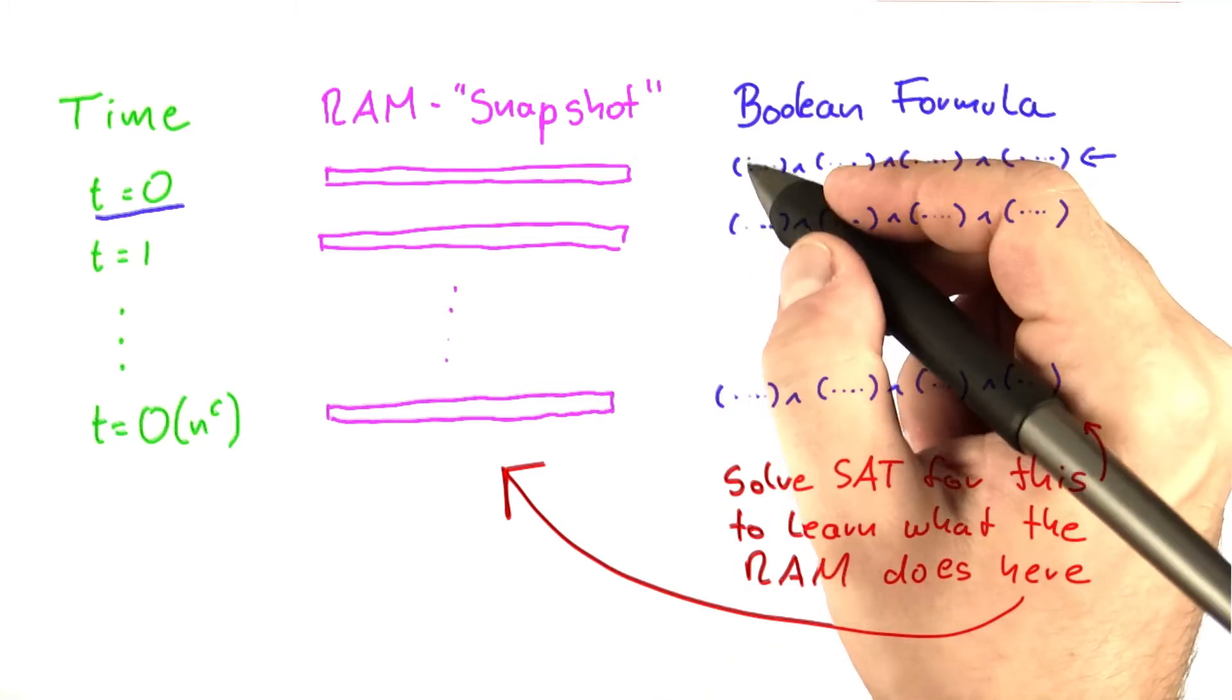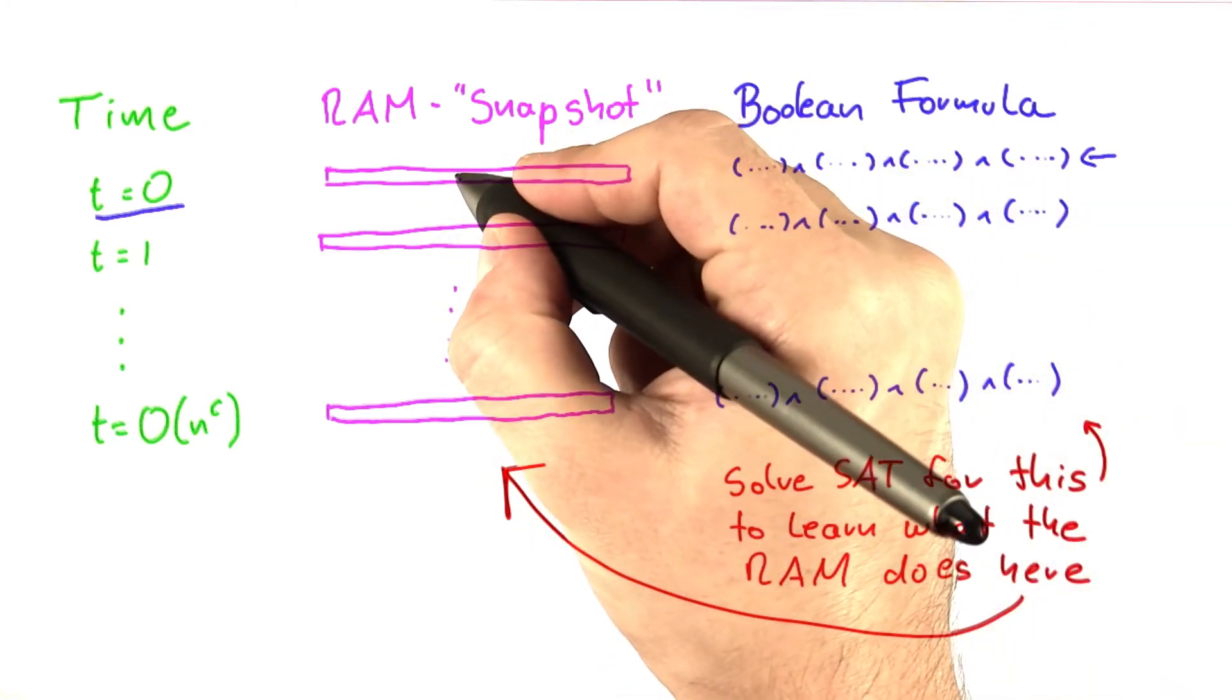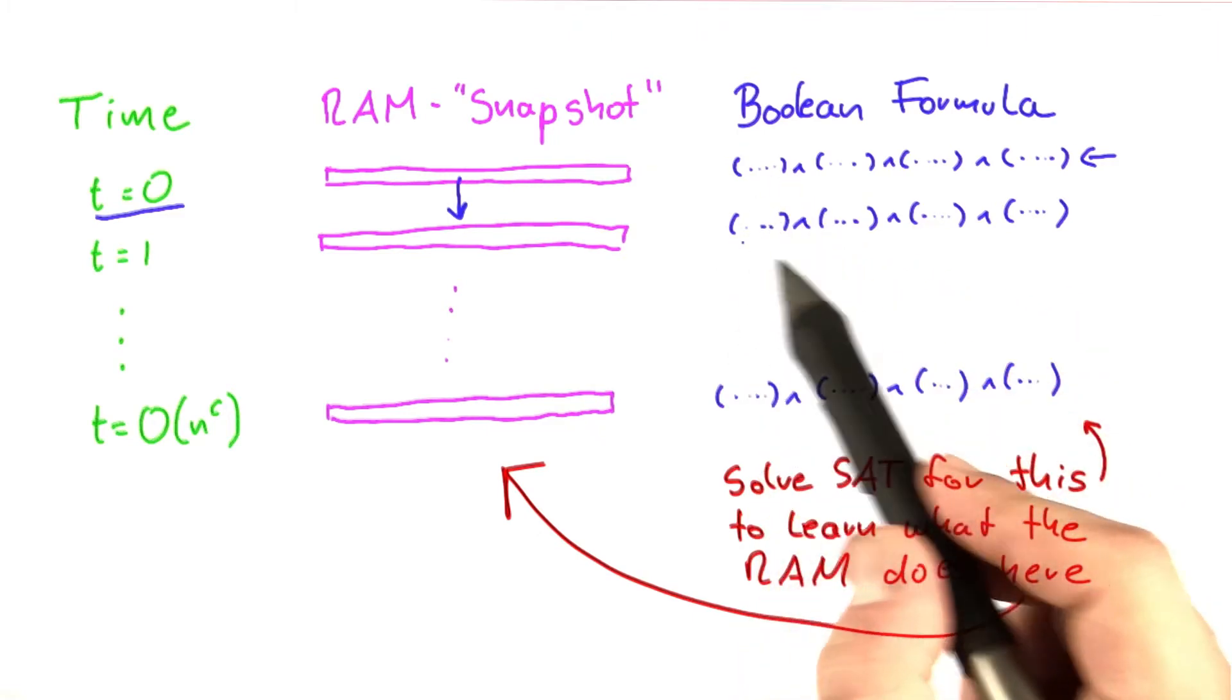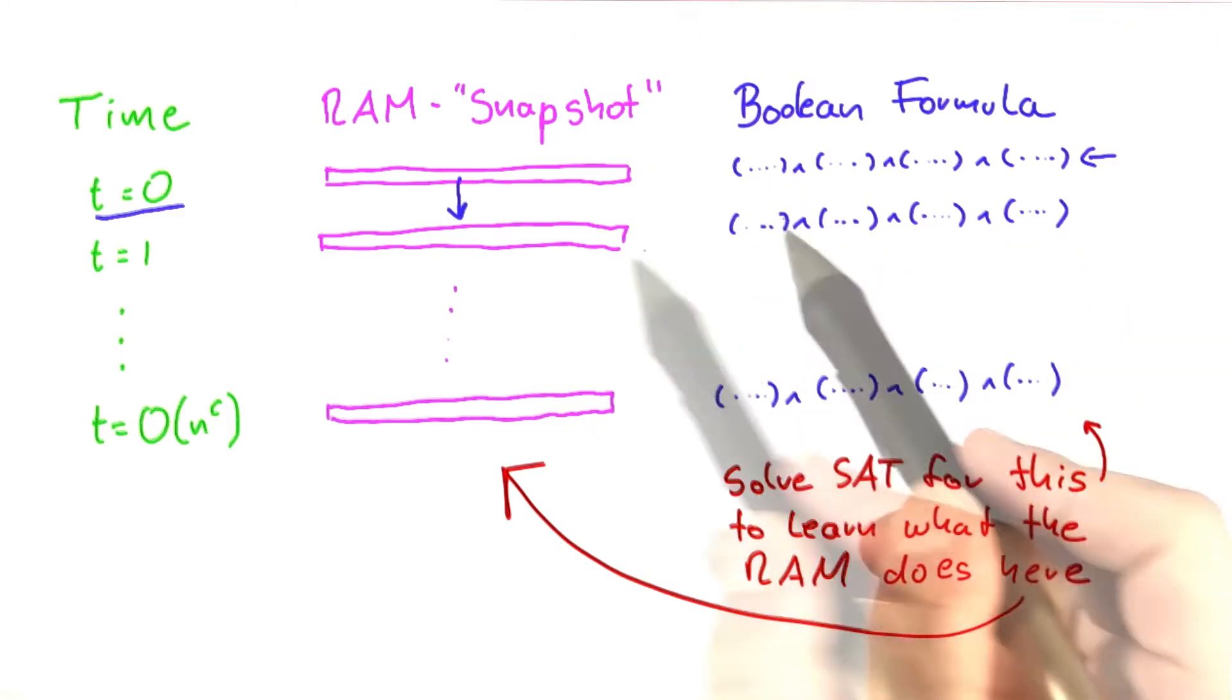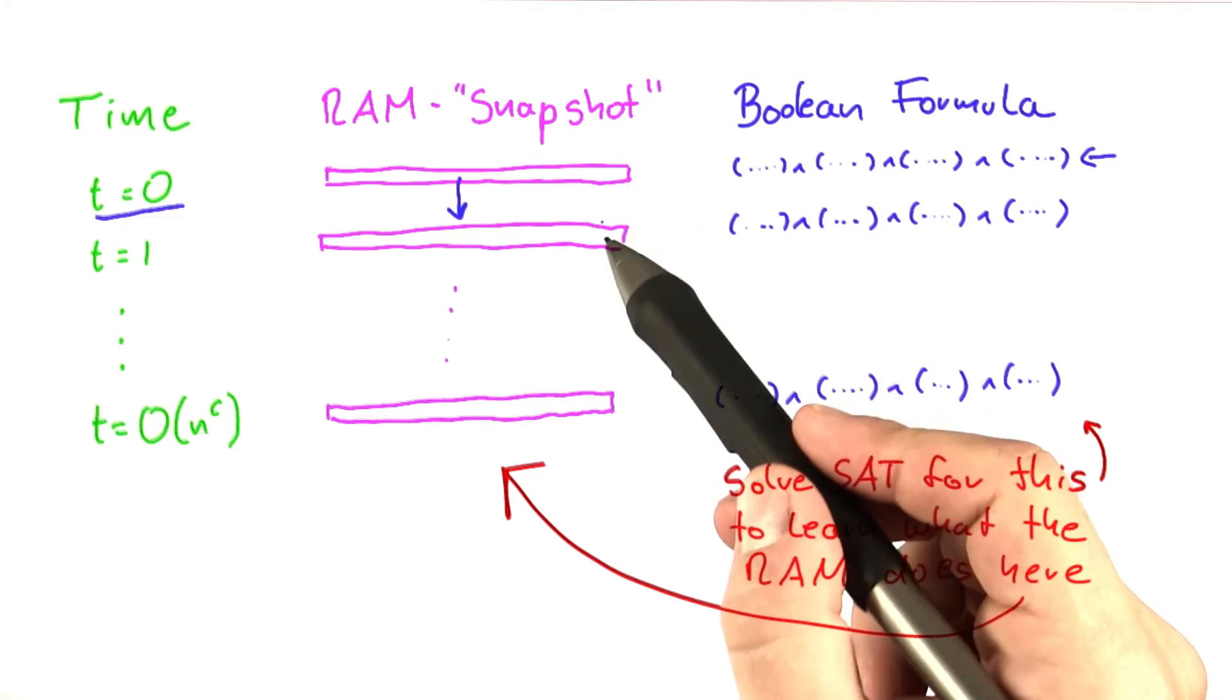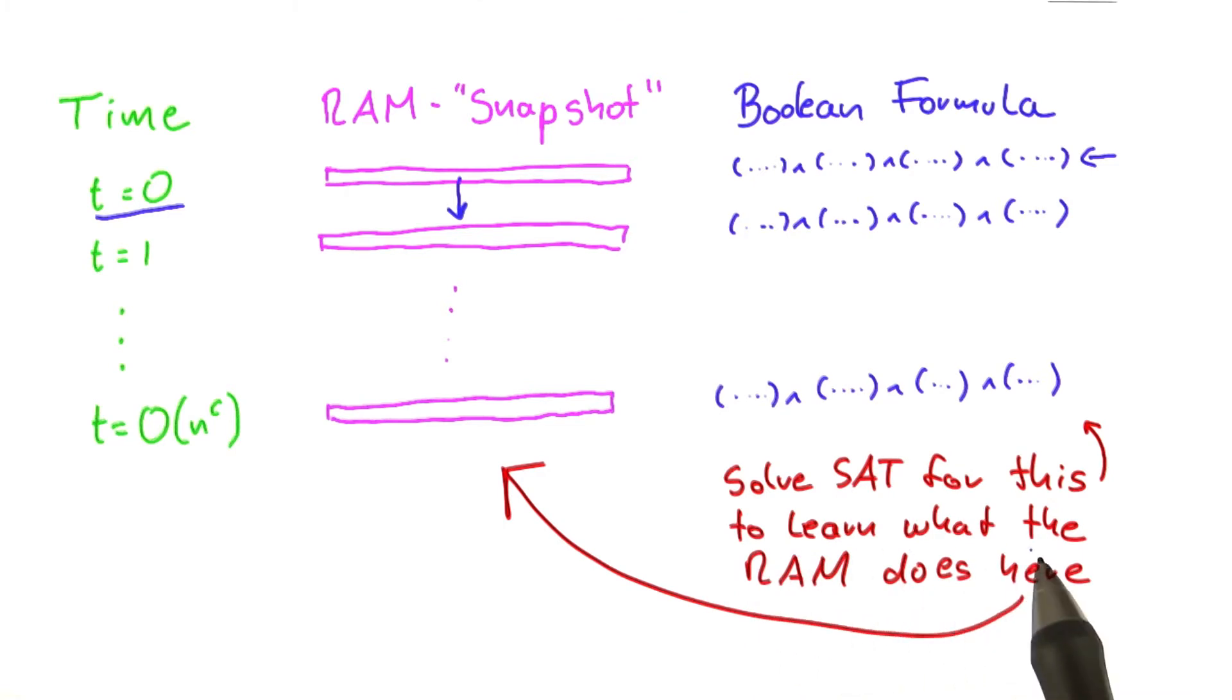But now we need to ensure that they fit together. Because once the machine starts out in this snapshot, it will move to the next one. And so we must make sure that if we have an assignment for the variables here that represents a snapshot, then the snapshot that is represented here must fit together with this one, so that it's a valid representation of what the RAM is doing here.